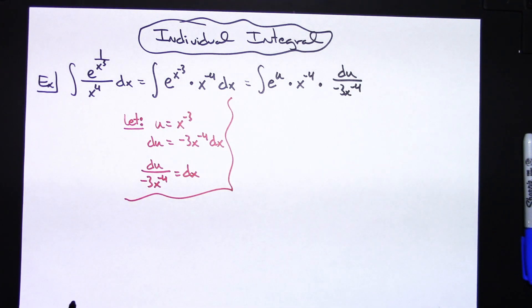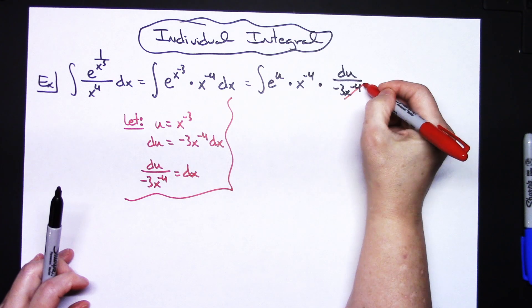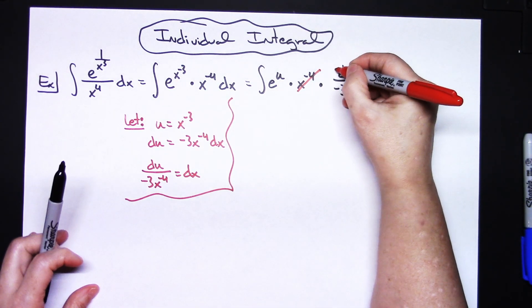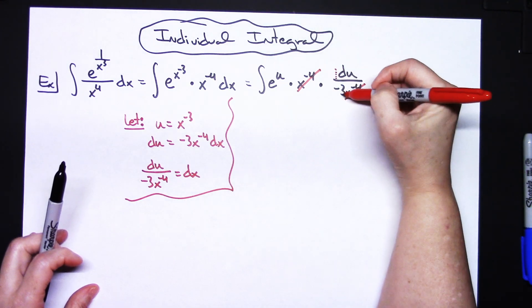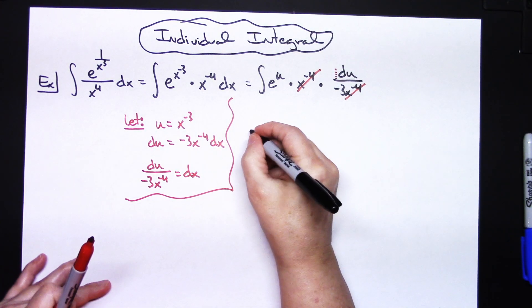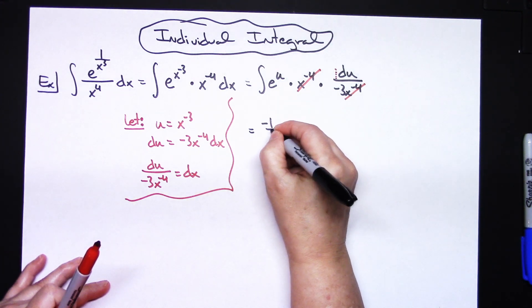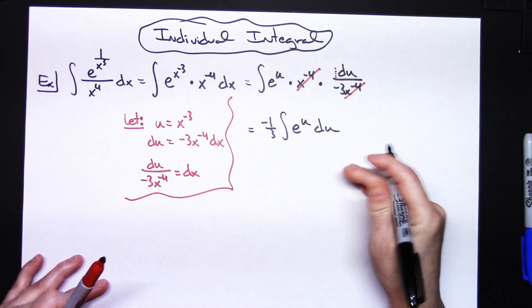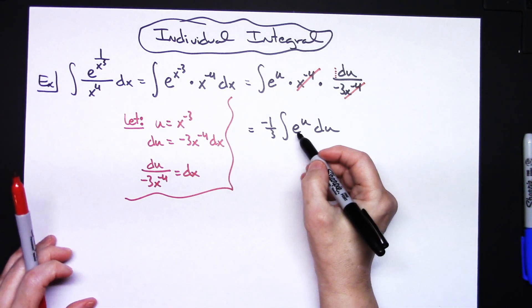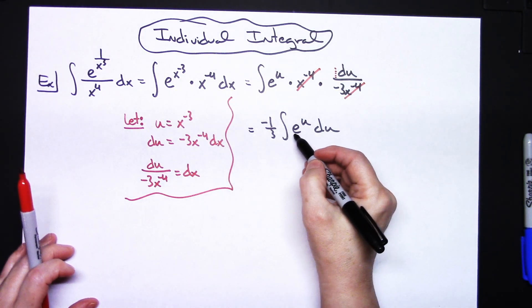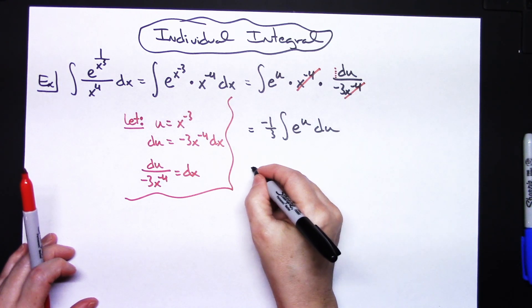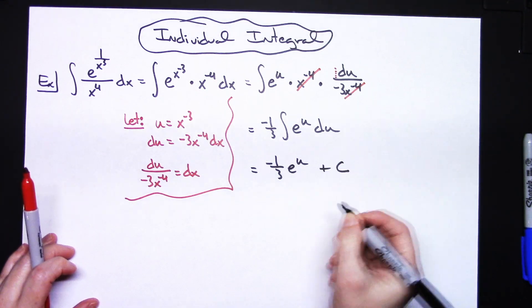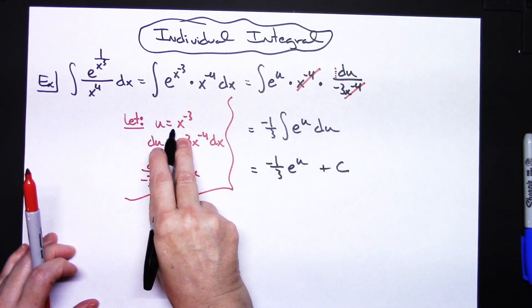Those x to the negative 4s cancel out easily. I've got that implied one in the front, so I can pull out a negative one-third in front: negative one-third times the integral of e to the u du. That's a pretty standard integral in Calc 1 — we should have this memorized. When you integrate e to the u you get e to the u, so I'll have negative one-third e to the u plus C.